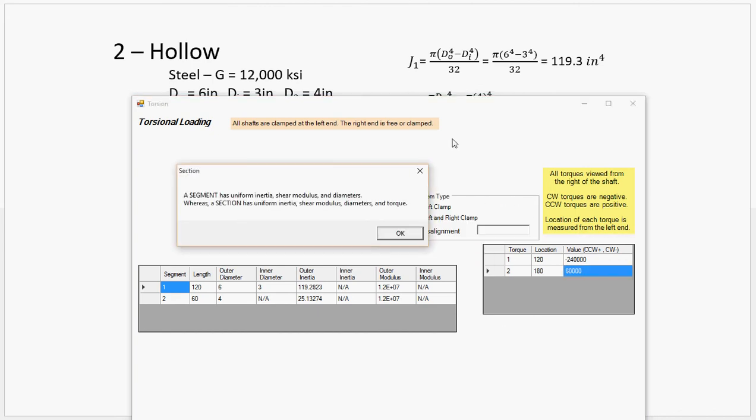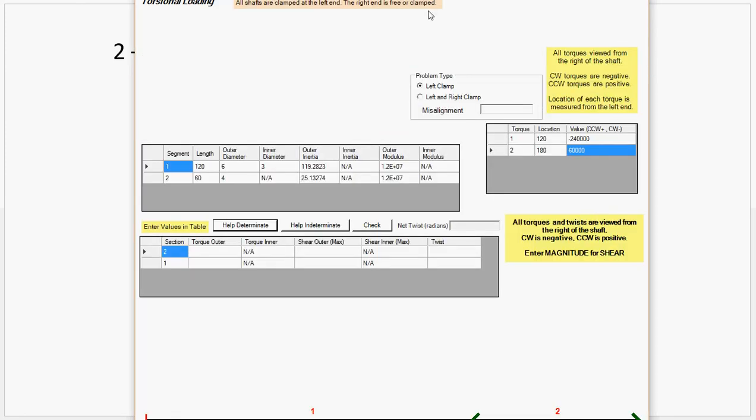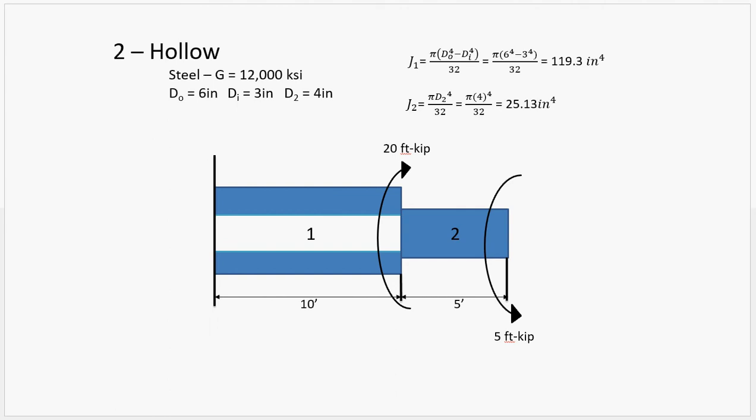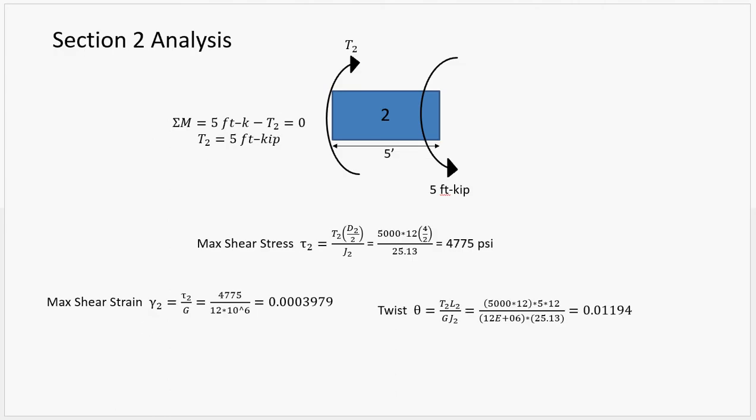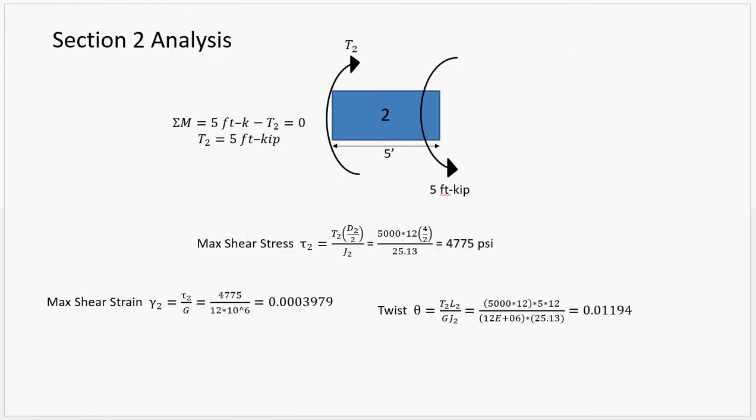And it's clamped on the left. Okay. Let's go ahead and solve. So, for segment one, or, I mean, working from the right end, the first one we look at is segment two. You can see here we have the five-foot kip applied. Then there's the reactionary amount of torsion within the material, which should equal the same amount. Then I have solved for the max shear stress, max shear strain, and the twist.